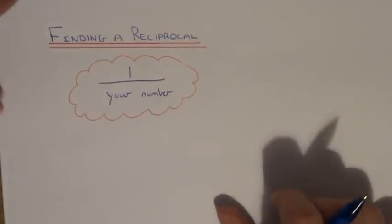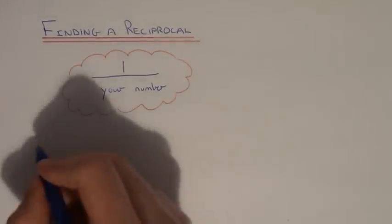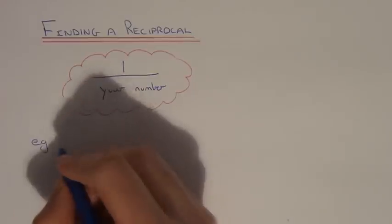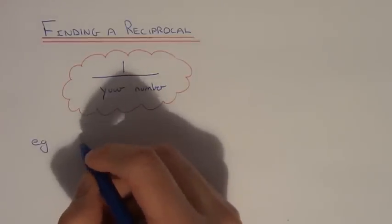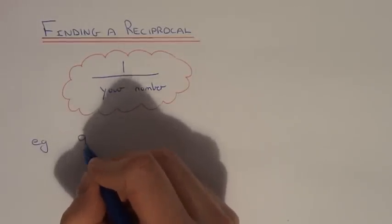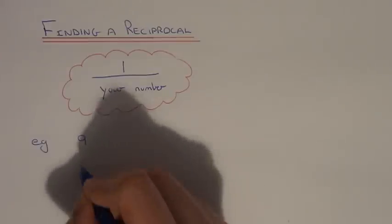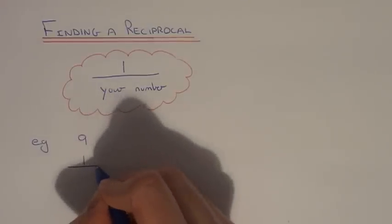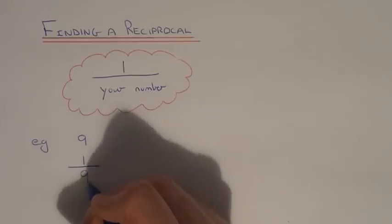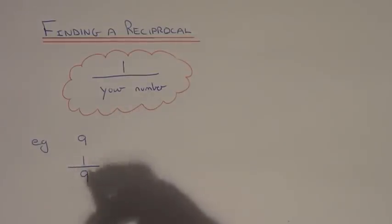So let's take a look at an example. Work out the reciprocal of 9. So basically all you need to do is do 1 divided by your number. And that's basically it, so we get the answer 1 ninth.